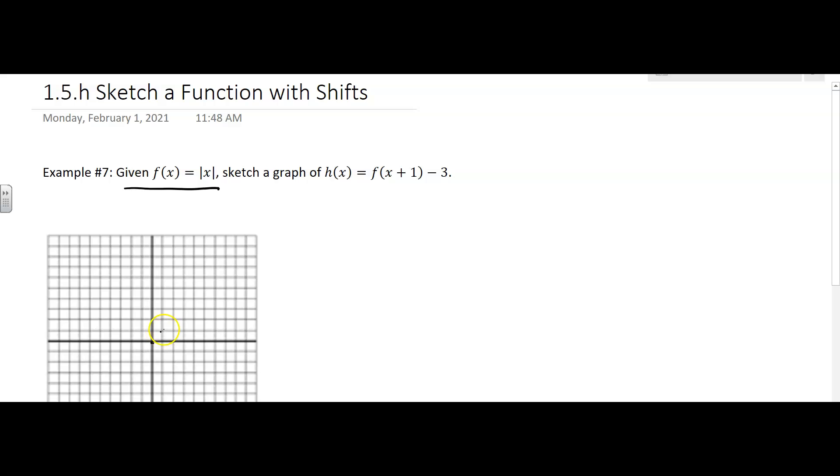So it's a V shape. I'm going to kind of do a dotted line here. That is not what I'm graphing, that is my reference though. That is f of x. So f of x looks like that toolkit function, that V shape.